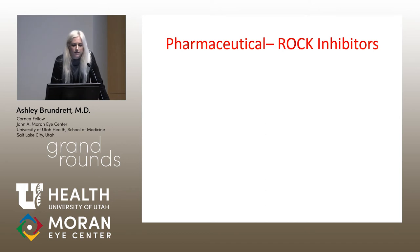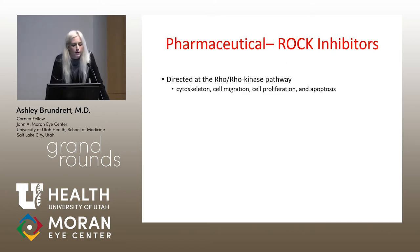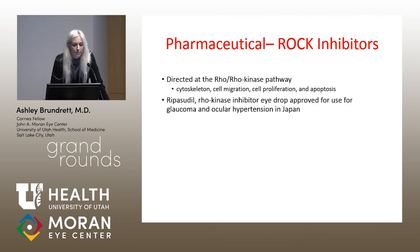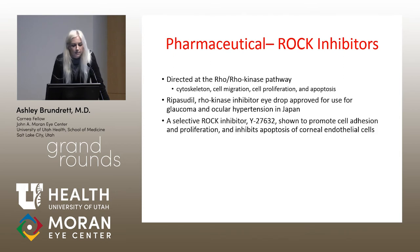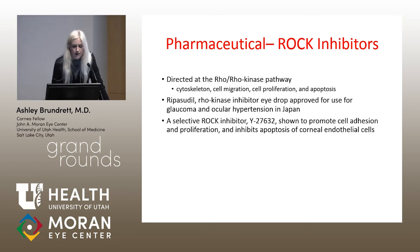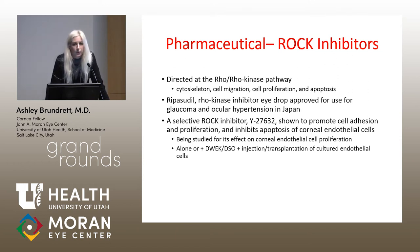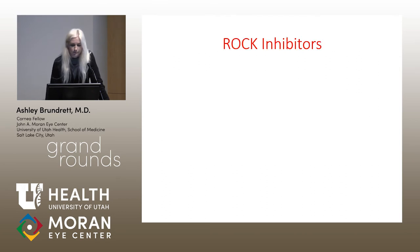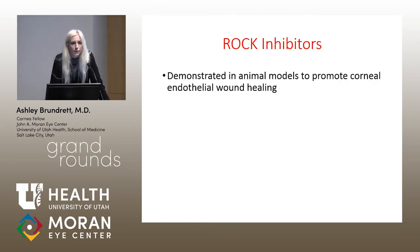Other modalities being studied are ROCK inhibitors — drugs directed at the Rho kinase pathway involved in regulation of the cytoskeleton, cell migration, cell proliferation, and apoptosis. Ripasudil is a Rho kinase inhibitor approved in Japan for glaucoma and ocular hypertension. A selective ROCK inhibitor, Y-27632, has been shown to promote cell adhesion, proliferation, and inhibit apoptosis of corneal endothelial cells. It's been studied for its effect on corneal endothelium — especially for cell proliferation — alone or combined with DWEK and DSO, or with injection or transplantation of cultured endothelial cells. It has been demonstrated in animal models to promote corneal endothelial wound healing, in both rabbit and primate models, alone or combined with cultured corneal endothelial cells.